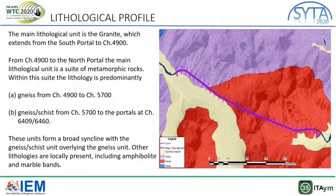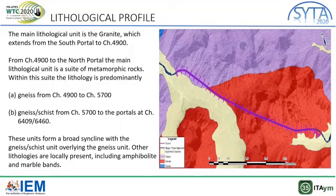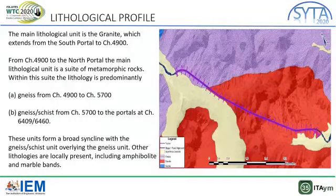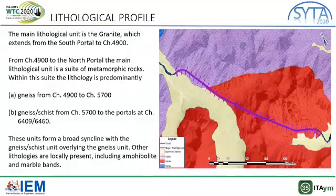The lithological profile is mostly about tunneling in gneiss. The main lithological unit here is gneiss, and it extends for more than half the length of the tunnel from the south portal. The balance length will have metamorphic rocks such as schist and gneiss, some instances of schist bands, and a few faulted locations. Also locally, some lithologies like amphibolite and marble are present, adding to the variety of lithologies encountered in this project.